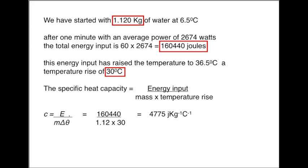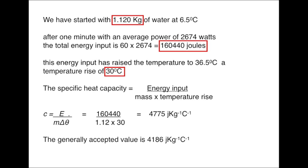Since several of our measurements were made only to two decimal places, it would be more proper to quote this value as 4800. This finding is about 10% higher than the generally accepted value of 4186 joules per kilogram per degree Celsius.